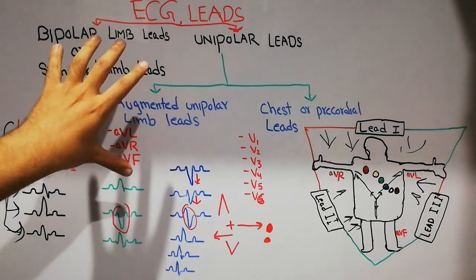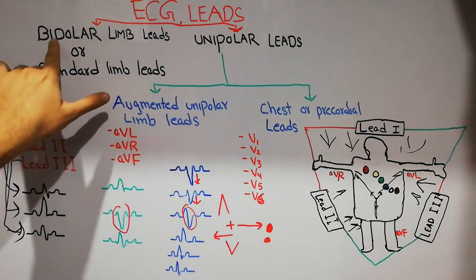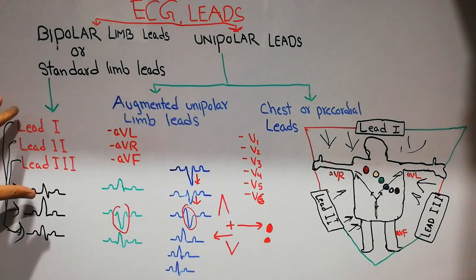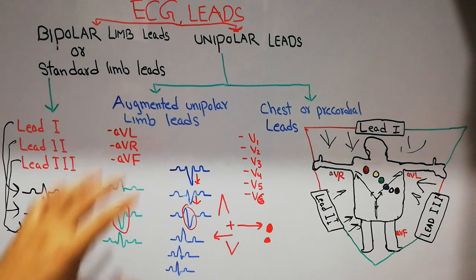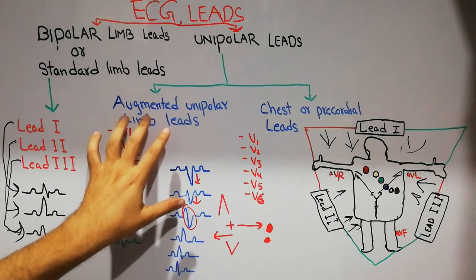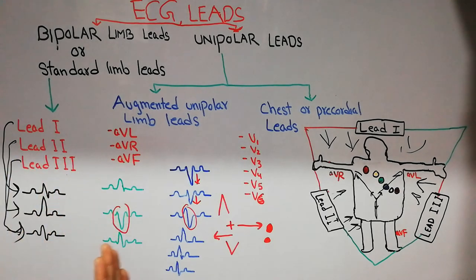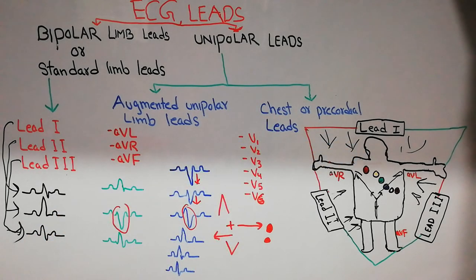In summary, the ECG machine has two basic types of leads: bipolar leads — where both leads are active — comprising Lead 1, Lead 2, and Lead 3; and unipolar leads, which are either augmented leads (AVR, AVL, AVF) or chest leads (V1–V6). All leads provide different views of the heart from different directions: upper, left, right, bottom, and horizontal plane. In further lectures, we will discuss each of these in detail.